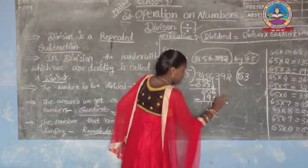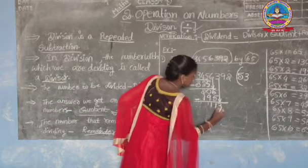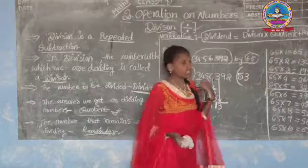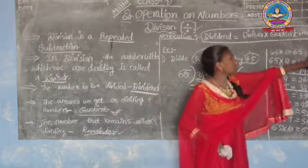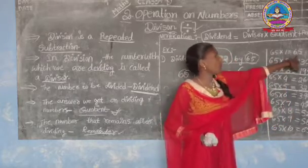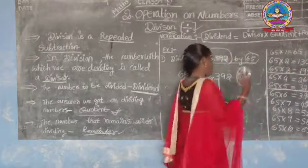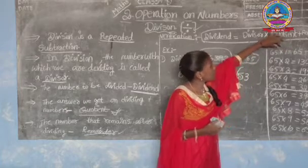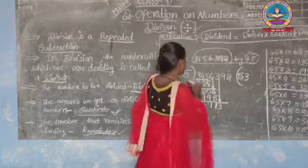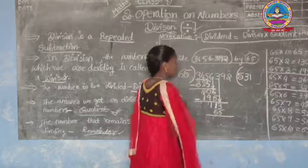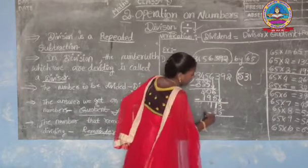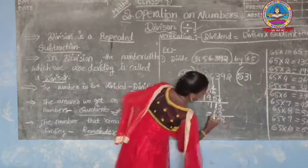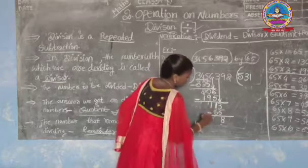We look for 113 in the table of 65. It is between 65×1=65 and 65×2=130. We take the smaller number — 65×1=65. Write 1 in the quotient and subtract 65 from 113. 3 minus 5 requires borrowing: 13 minus 5 is 8; 0 becomes 10 after borrowing, 10 minus 6 is 4. The result is 48. Bring down the next digit 9 to get 489.